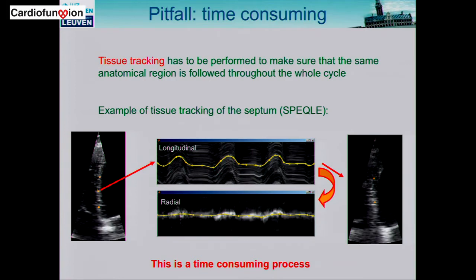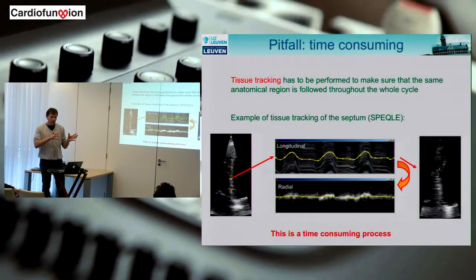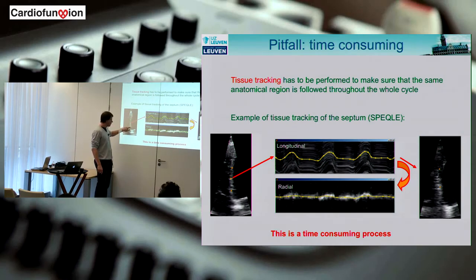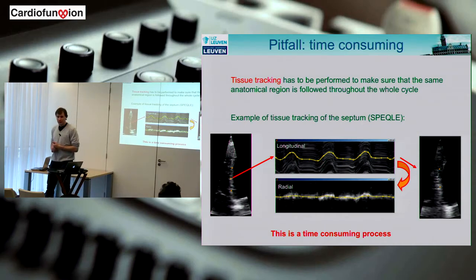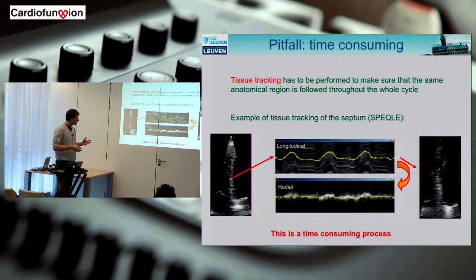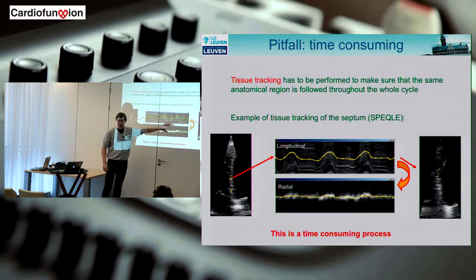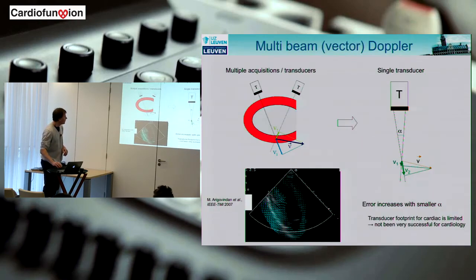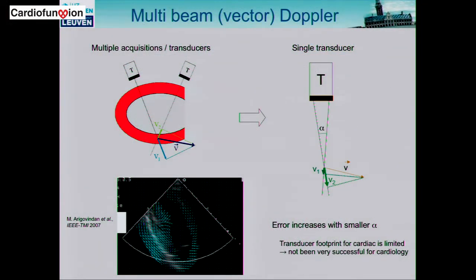Another Doppler limitation is the need to follow the same anatomical region throughout the cardiac cycle. There was no good automatic method for this in the Doppler approach, so the physician had to manually track the region of interest on the B-mode image frame by frame. Some tools using two orthogonal M-mode lines were developed to facilitate tracking, but the process remained cumbersome and time-consuming. These pitfalls — angle dependency and manual tracking — both stem from measuring only one component of the velocity vector.